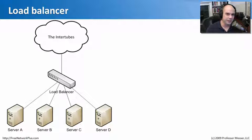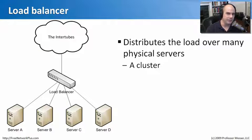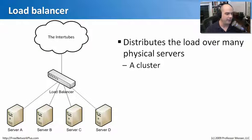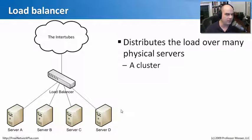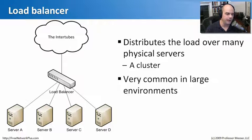Another device you may see on a network is a load balancer. The goal of a load balancer is to take incoming traffic and distribute it over many separate devices. For example, google.com isn't a single server — it's hundreds of servers. In your environment you may have a cluster of servers configured exactly the same way — server A, B, C, and D with the same website. When someone comes in from the internet, the load balancer sends the user to the server with the smallest load for the best end-user experience.